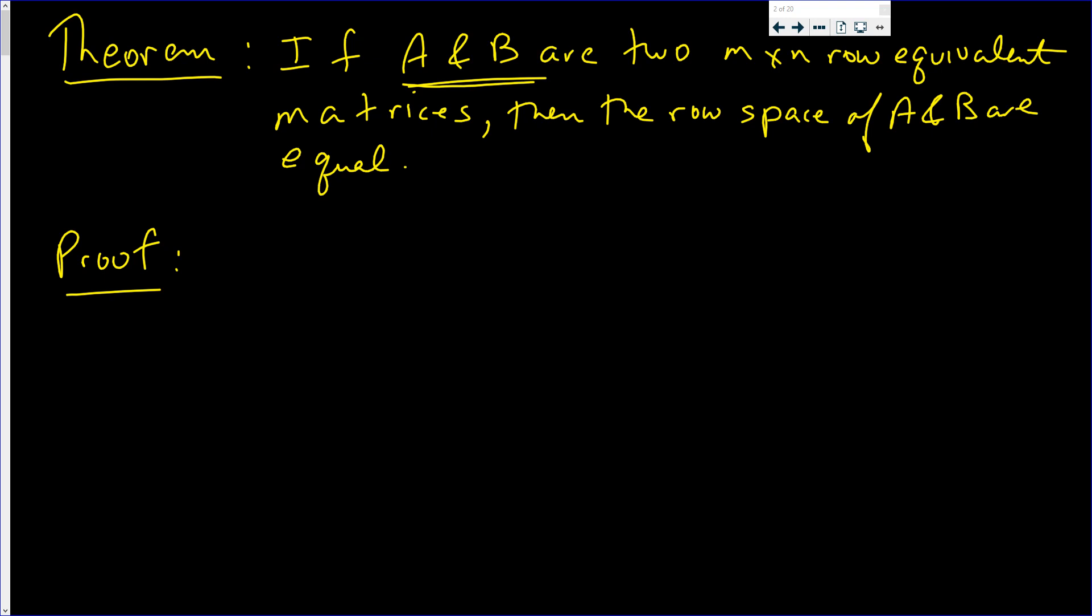Generally how you show this is you show that the row space of A is contained in B, and then since A and B are arbitrary matrices, the row space of B is contained in A, and then you have the two row spaces are equal.